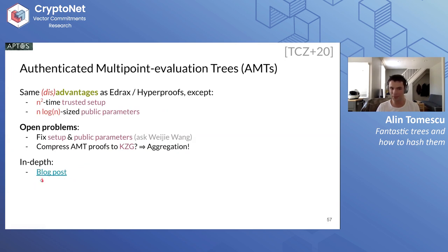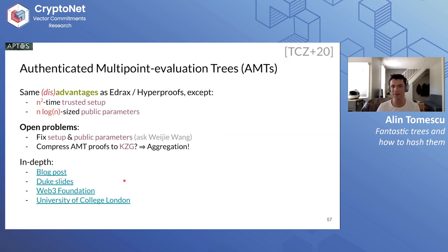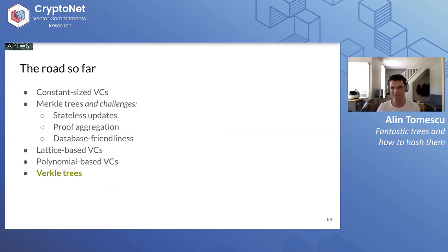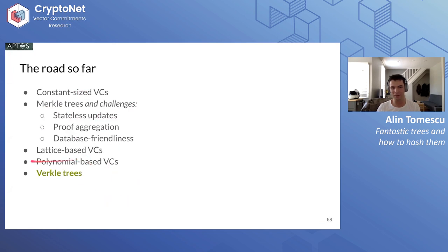We have an in-depth blog post on AMT, slides, and video presentations available. That covers polynomial-based VCs, which address stateless updates and proof aggregation, and have other properties like unstealability and reasonable efficiency in practice — depending on who you ask. Now let's see what we can do about database friendliness.